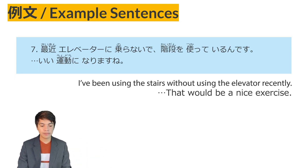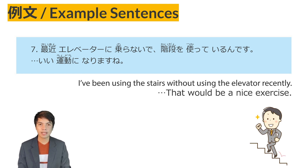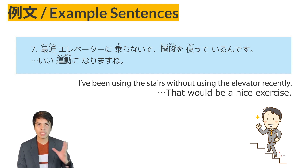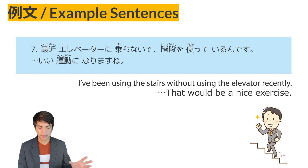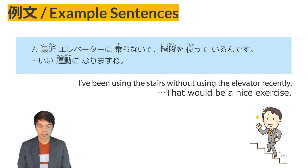Example sentence number seven: Saikin, erebeeta ni noranai de kaidan o tsukatte irun desu. Ii undou ni narimasu ne. Recently, without riding the elevator — noranai de, without using the elevator — kaidan o tsukatte irun desu, I've been using the stairs. The response: that would be nice exercise.